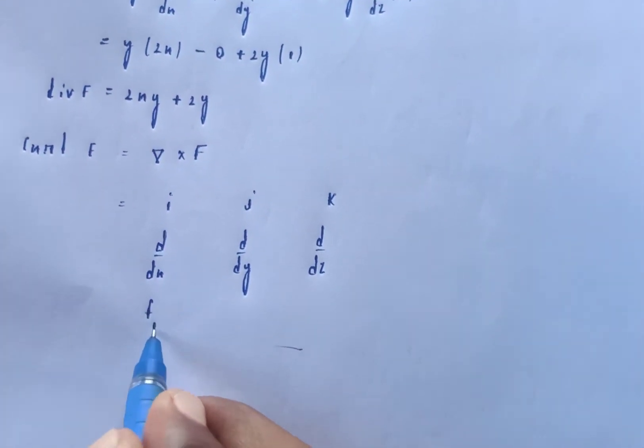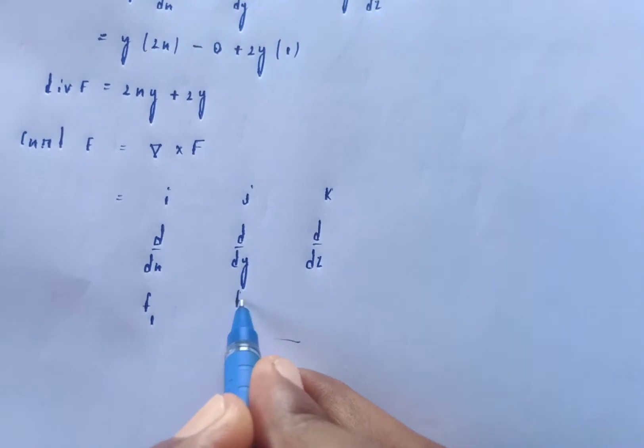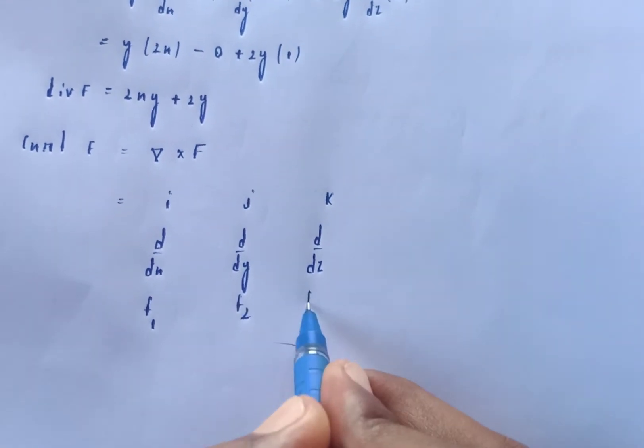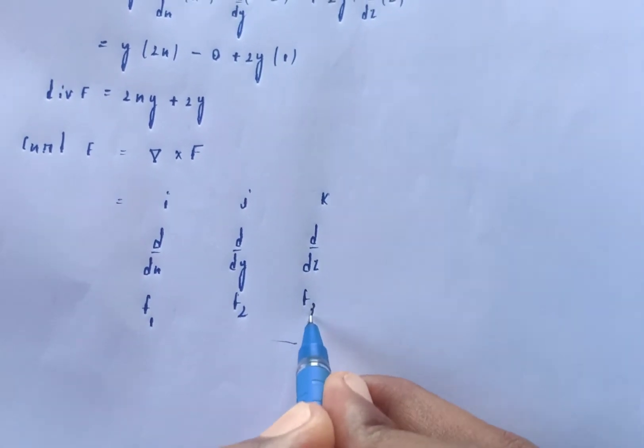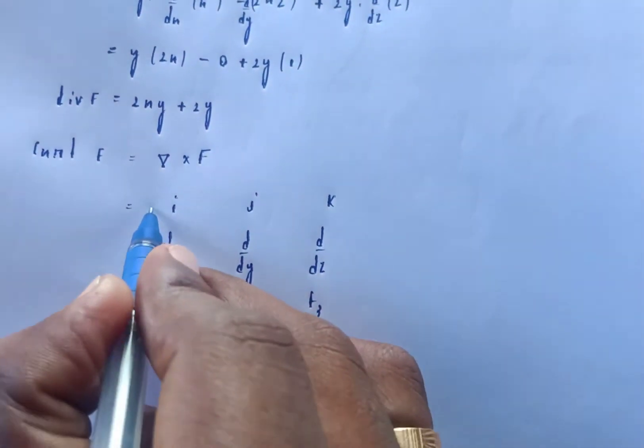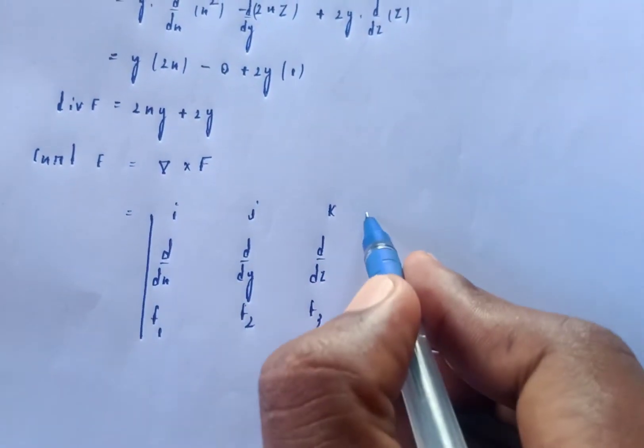So the divergence of f involves combining the results for f1, f2, and f3. This is the way we can do it — the divergence is computed from the sum of those partial derivatives.